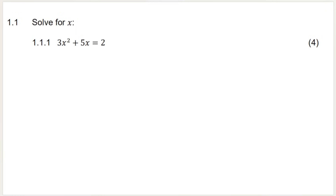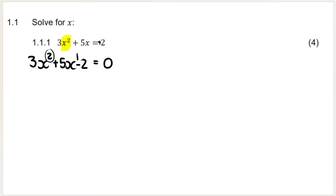Our first question says solve for x. As soon as you see a squared term like that you need to think: I must get this into standard form, which includes making it equal to zero. So we're going to have 3x squared plus 5x minus 2 in descending powers of x — biggest exponent first. Then to solve a quadratic equation we need to factorize. This is a trinomial — I have videos on factorizing trinomials, link below.